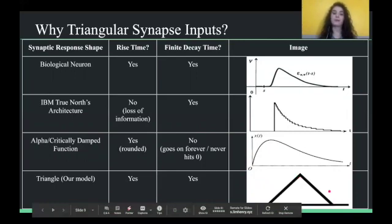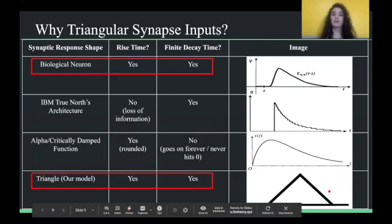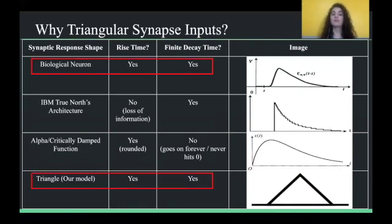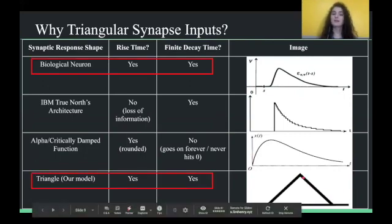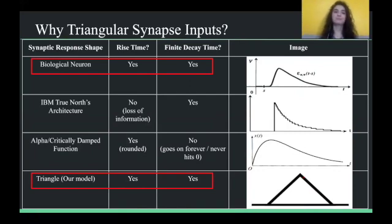And lastly is our triangular model, which maintains both of those important characteristics. We have the rise time, and then we also have the finite decay time. So, both of those characteristics are present, and although it's not as much rounded, having both of those is really a bit more important. So, that's why we chose to do the triangular synapse, and with that, since triangles are linear, it also fits right into our LSRM model.